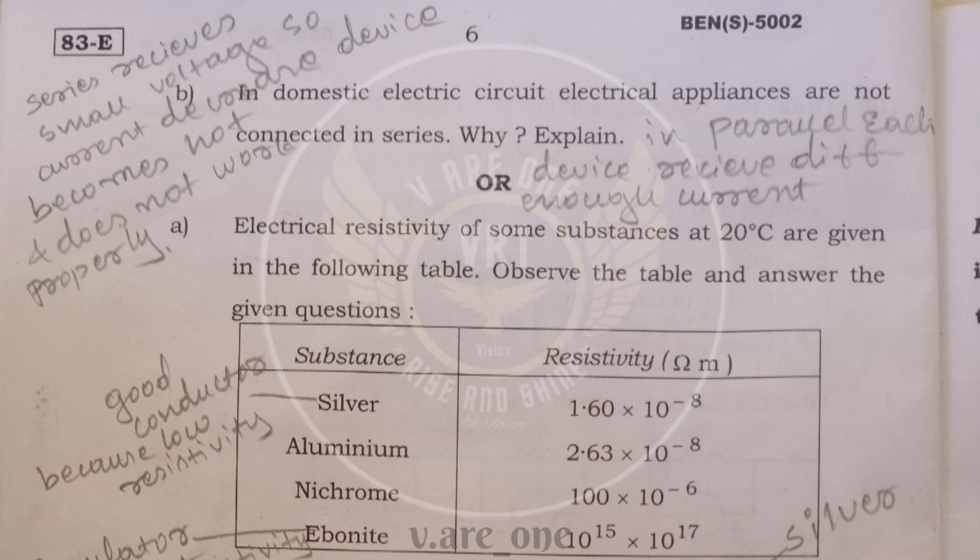Question B. In domestic circuit electrical appliances are not connected in series. Why explain? In a domestic circuit in series connection it receives small voltage. So current decreases and device becomes hot and does not work properly. But in parallel each device receives a different EMF current. So we use a parallel connection in domestic circuit.